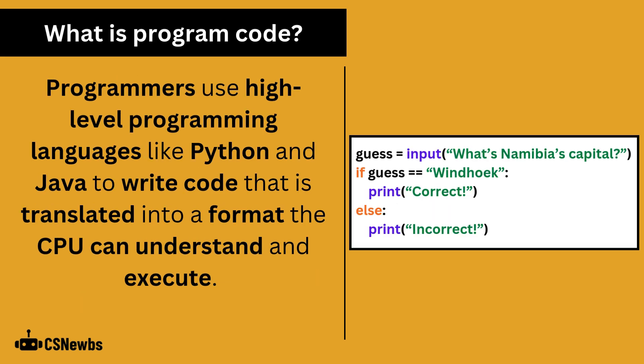Programmers use high-level programming languages like Python and Java to write code that is translated into a format the CPU can understand and execute.